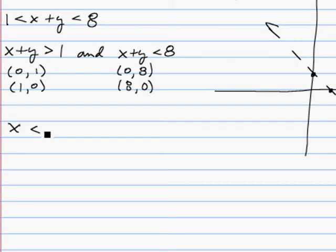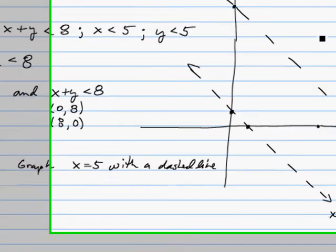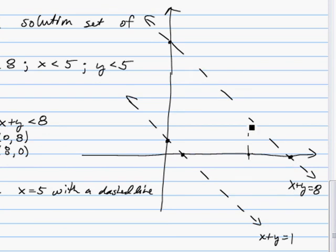When we look at x is less than 5, we would want to look at the vertical line x equals 5. But we're going to graph it with a dashed line. So we'll say that's approximately 5 there. And this is x equals 5.